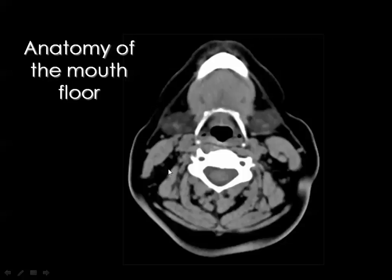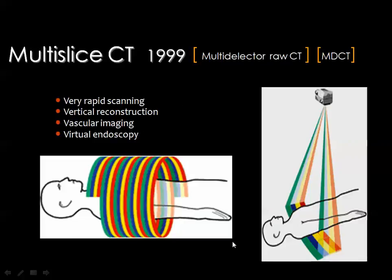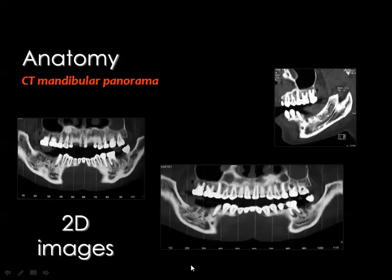The multi-detector CT has facilitated imaging of complex anatomic areas such as the maxillofacial region. Major advantages include very rapid scanning, volumetric reconstruction, vascular imaging, and virtual endoscopy. Instead of a single detector in front of the X-ray tube, we can have more than one detector, getting sections according to the number of detectors. With four detectors you get four sections per tube rotation, enabling faster scans and better reconstruction of the mandibular ramus and CT panorama.